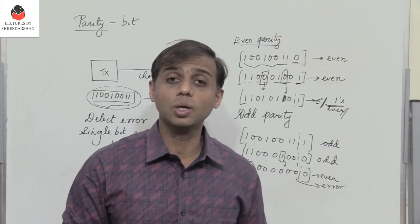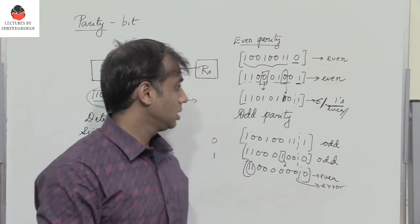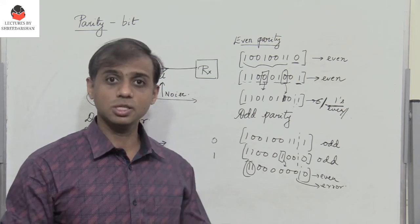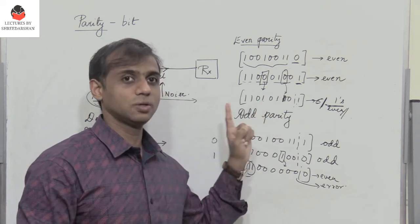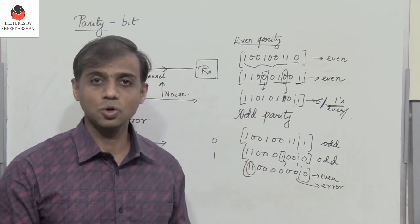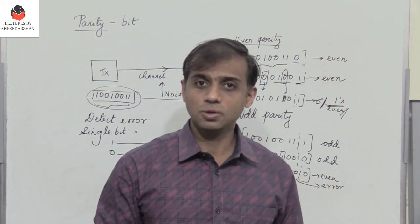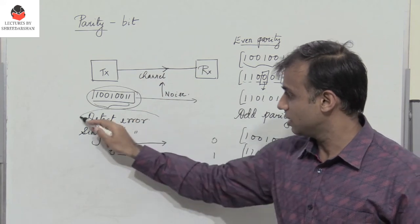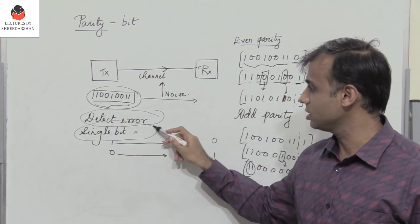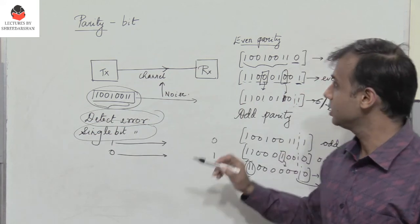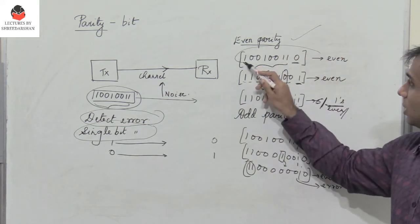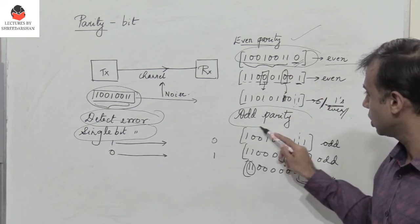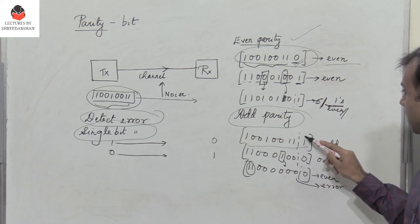There are a number of techniques and algorithms that can identify the exact position of errors and even correct them, but this is beyond the scope of this lecture. In summary: a parity bit is used to detect errors and identify single bit errors. In even parity, the total number of 1s including the parity bit must be even; in odd parity, it must be odd.